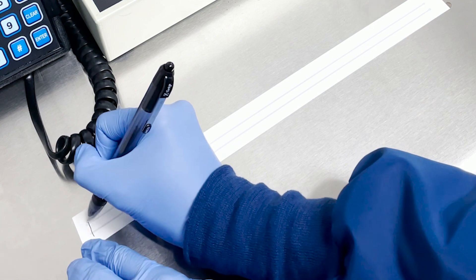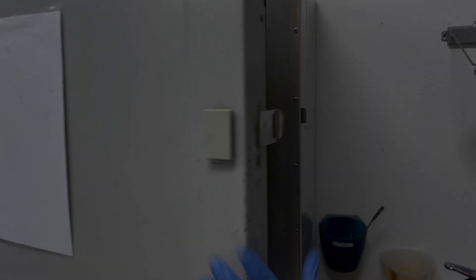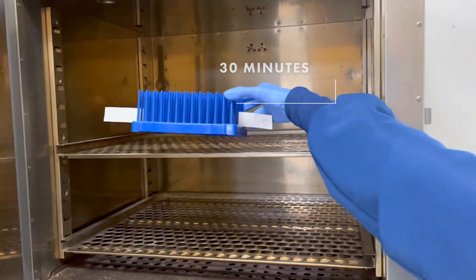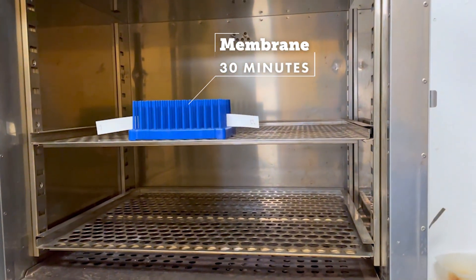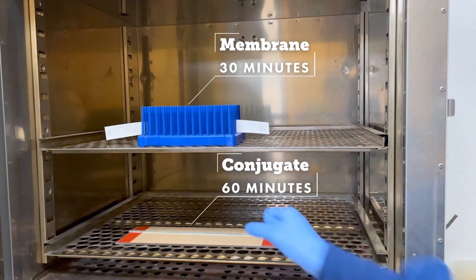On your membrane, make sure you note which is the test line and which is the control line. Put your membrane in a 37 degree Celsius forced air oven for half an hour and put your conjugate pad in the oven for a full hour.